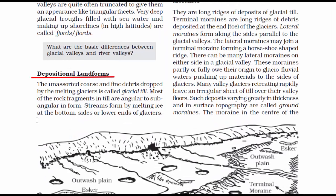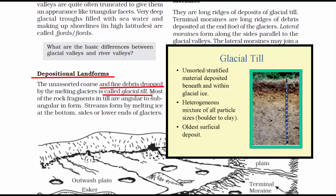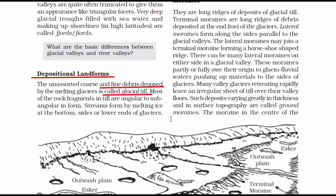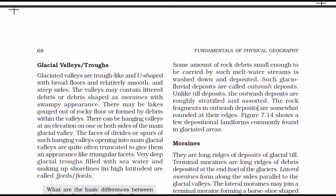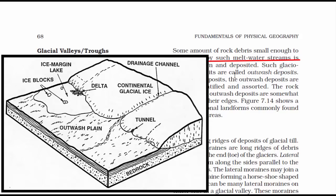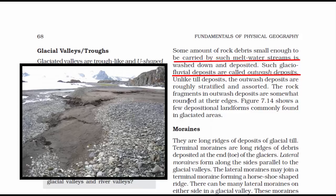Now we'll read about some depositional landforms that exist due to glaciers. Fine debris of rocks in the form of sediments found in glaciers are called glacial till. When glaciers melt, small streams of water flow at the bottom or lower ends of the glacier. In this stream, rock debris are carried and deposited. These rock debris are also called glacial fluvial deposits, and there is another term called outwash deposits. These outwash deposits are somewhat round at their edges due to the continuous force of running water making the edges smooth.